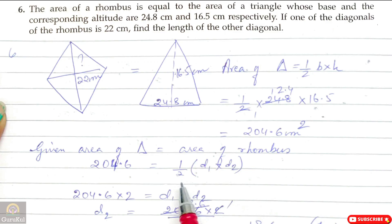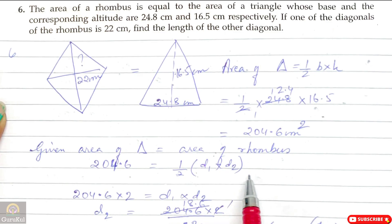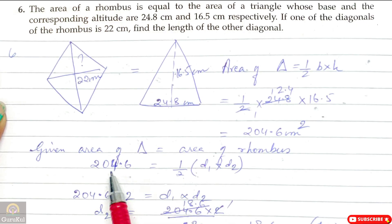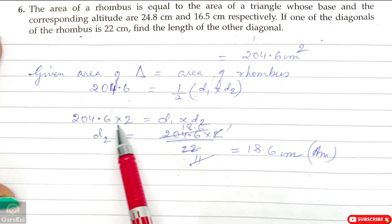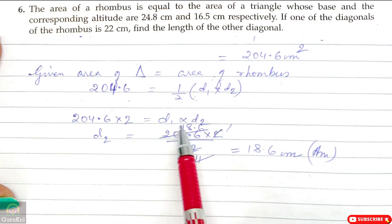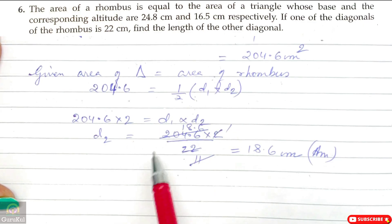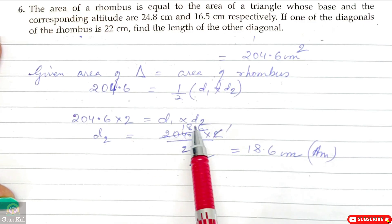The formula for the area of a rhombus is half into diagonal 1 into diagonal 2. So our equation is: 204.6 into 2 is equal to D1 into D2. D1's value is 22 into D2.